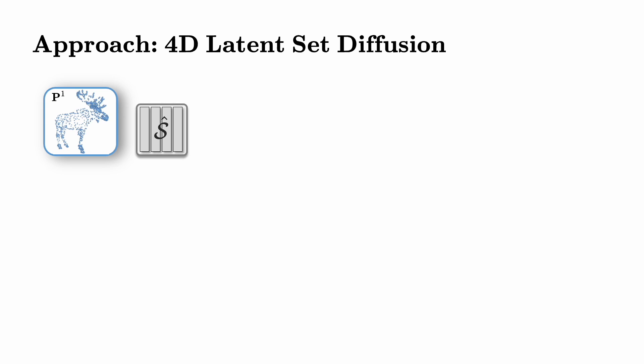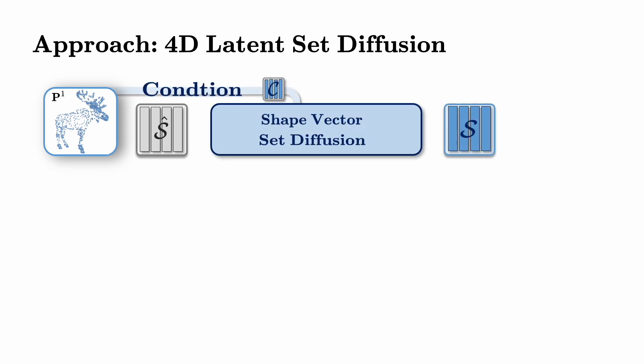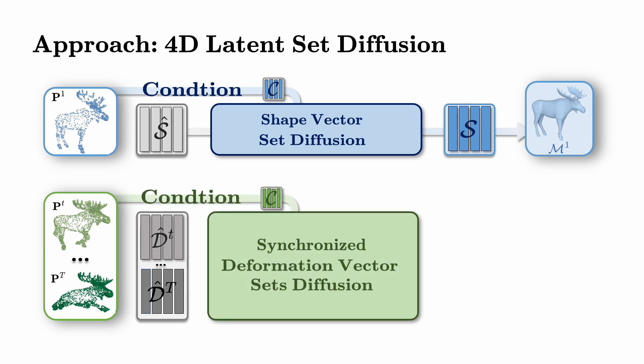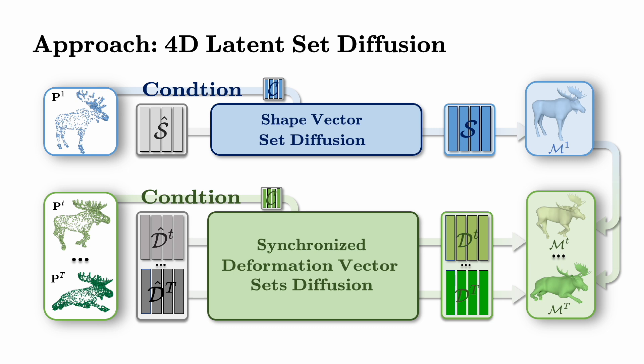Starting with the initial input frame P1, which is used in the shape vector set diffusion, we obtain denoised shape codes S to reconstruct the geometry of the reference frame M1. Concurrently, the subsequent input frames Pt are processed in the synchronized deformation vector sets diffusion to generate denoised deformation codes Dt, with each set encoding the deformation from the reference frame M1 to each subsequent frame Mt.